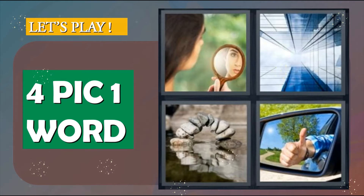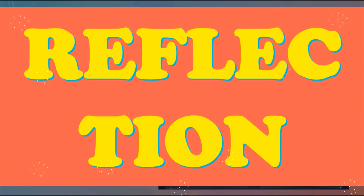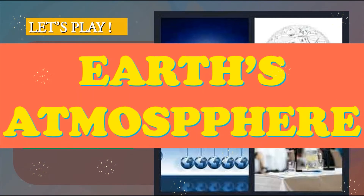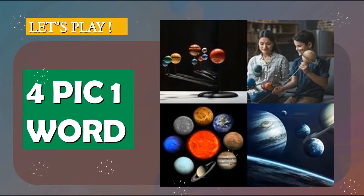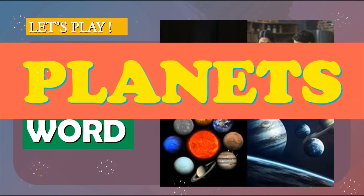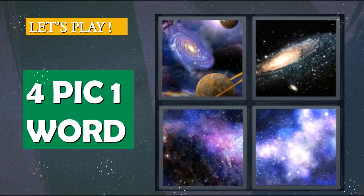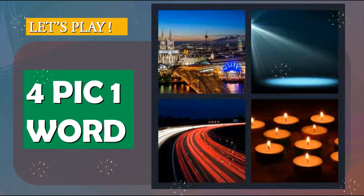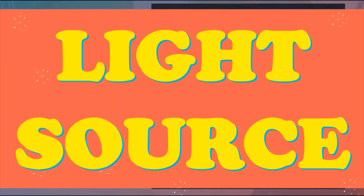Next word. What do you think is the answer? Reflection. Very good — Reflection. What about this? It's Earth's atmosphere. Good job. This one is very simple — the correct answer is planets. Good job. What about this? This is our solar system. And what about this? We have street lights, city lights, theater lights, and candle. These are all light sources. Good job.